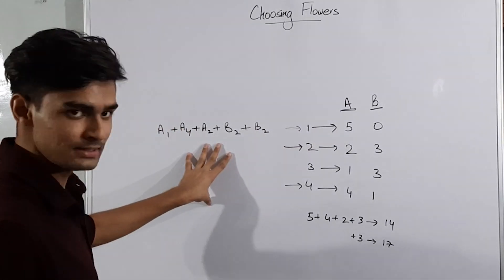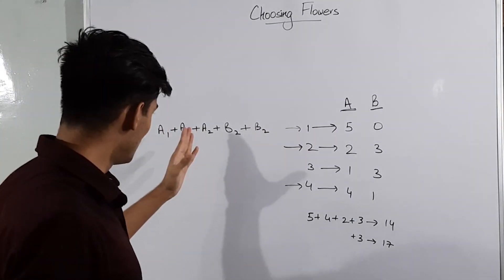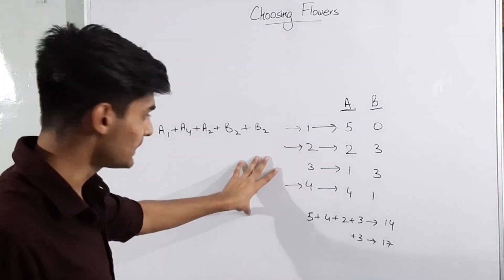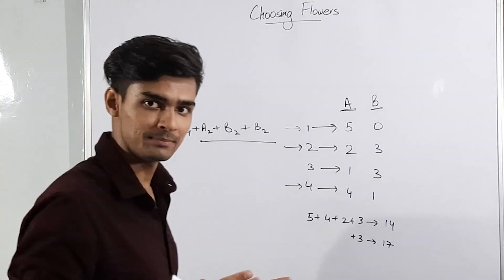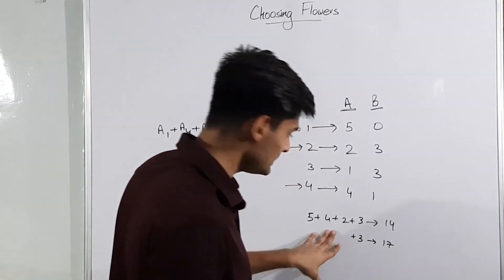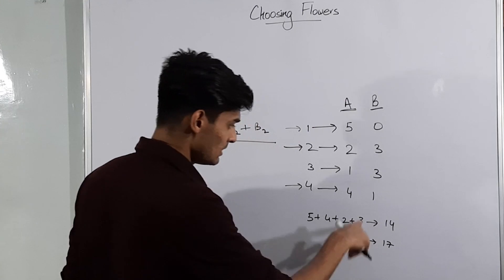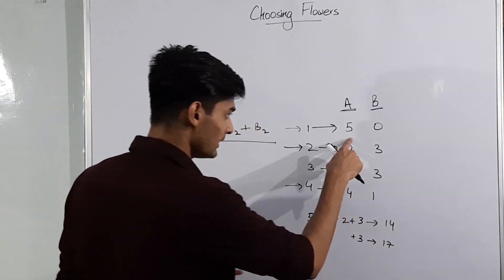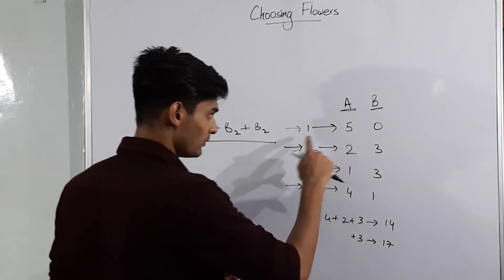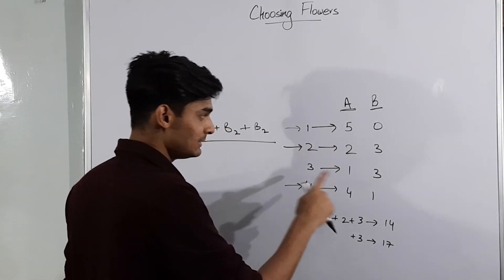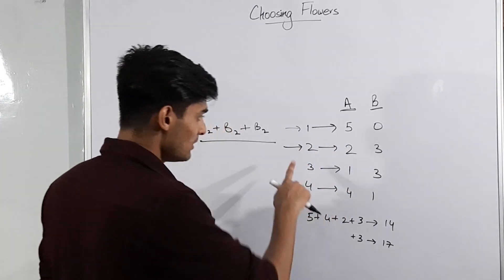Now let's take a look here. We can see that after taking single flower from some particular types, we are actually fixing the type and then taking all the subsequent flowers from that type itself. So basically if we see here, we first take all the flowers which had an AI greater than the BI of the flower we fixed. So basically from type 1 and type 4 and then we took all the subsequent flowers from type 2 itself.